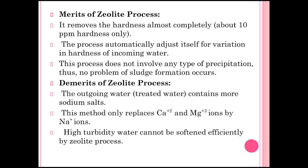Advantages and disadvantages of the zeolite process — Advantages: it removes hardness almost completely (about 10 ppm hardness only remains); the process automatically adjusts itself to variations in hardness of incoming water; this process does not involve any precipitation, so there is no problem of sludge formation. Disadvantages: the outgoing water contains more sodium salts; this method only replaces calcium and magnesium ions by sodium ions; highly turbid water cannot be softened efficiently by the zeolite process.